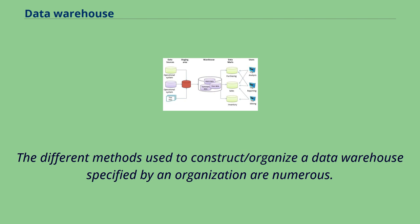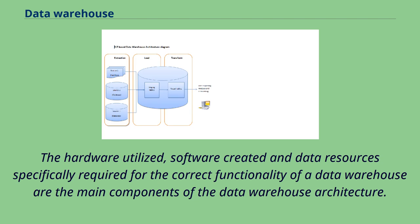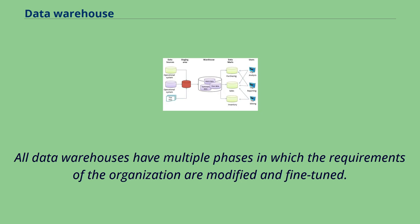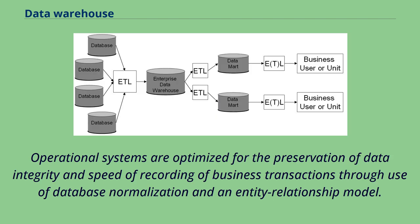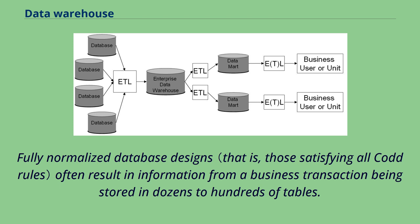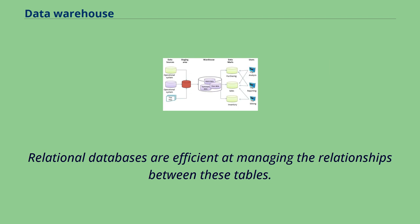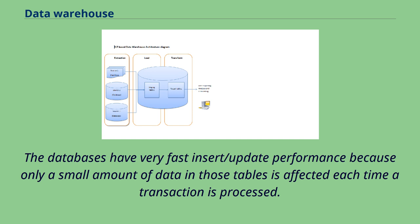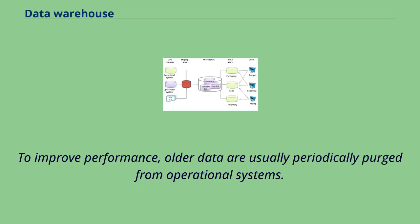The different methods used to construct and organize a data warehouse are numerous. The hardware utilized, software created, and data resources required for correct functionality are the main components of the data warehouse architecture. All data warehouses have multiple phases in which the requirements of the organization are modified and fine-tuned. Operational systems are optimized for the preservation of data integrity and speed of recording business transactions through database normalization and an entity relationship model. Operational system designers generally follow Codd's 12 rules of database normalization to ensure data integrity.